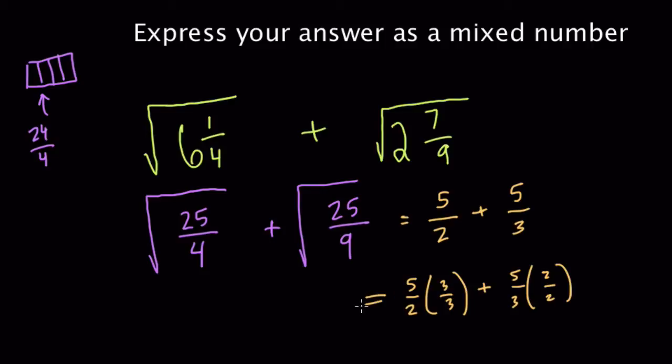So what happens, I'll work this way now to the left. We have this fraction, 5 times 2 is 10, 3 times 2 is 6. Over here, 5 times 3, 15. And 2 times 3, 6.